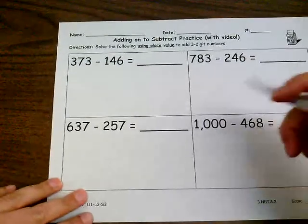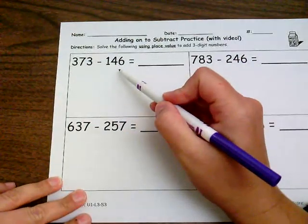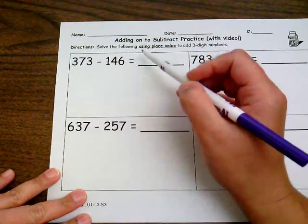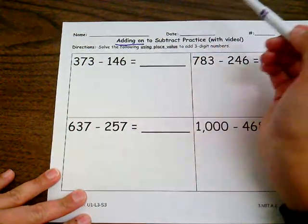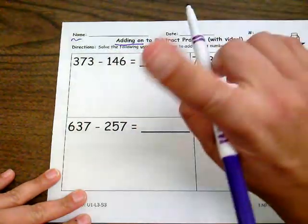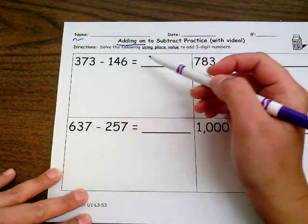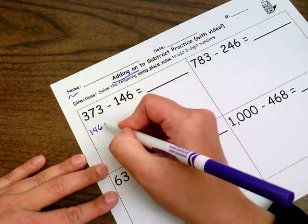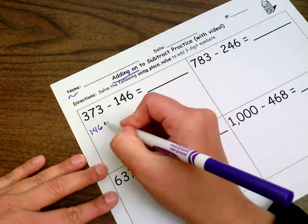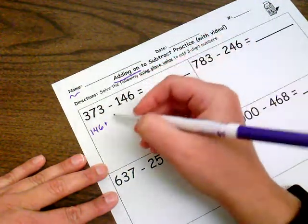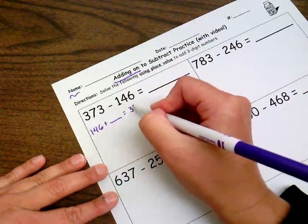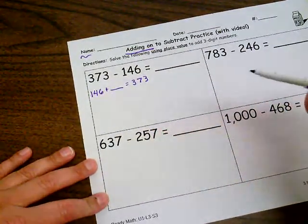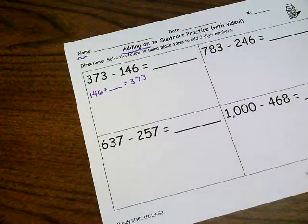Let's do this first one together. So I'm trying to solve this subtraction problem, 373 minus 146. But the strategy I'm going to use is adding on. Make sure you put your name, date, and number at the top. Alright, so we're gonna do some adding on.